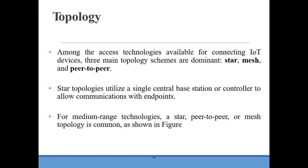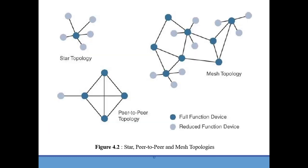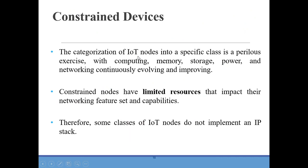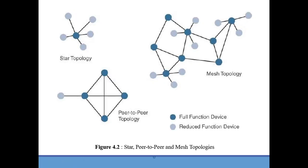The next communication criteria is topology, which refers to how devices in a network are arranged. The dominant topologies used in access technologies are star, mesh, and peer-to-peer. Star topology uses a single central base station or controller to allow communication with endpoints. For medium range technologies, a star, peer-to-peer, or mesh topology is common. The pictorial representation of star topology, mesh topology, and peer-to-peer topology is as shown.